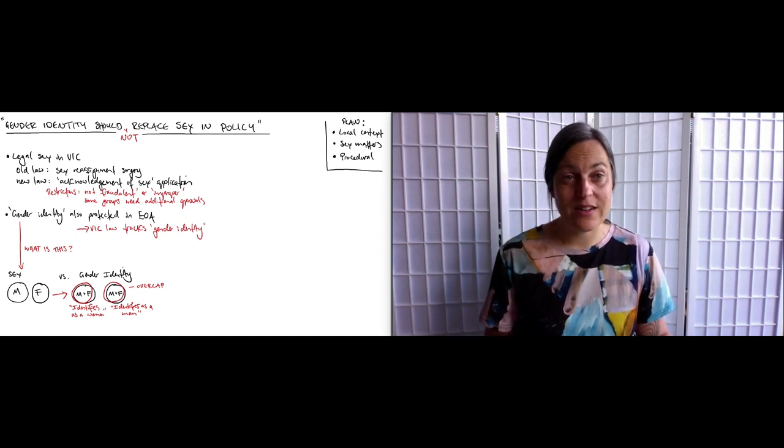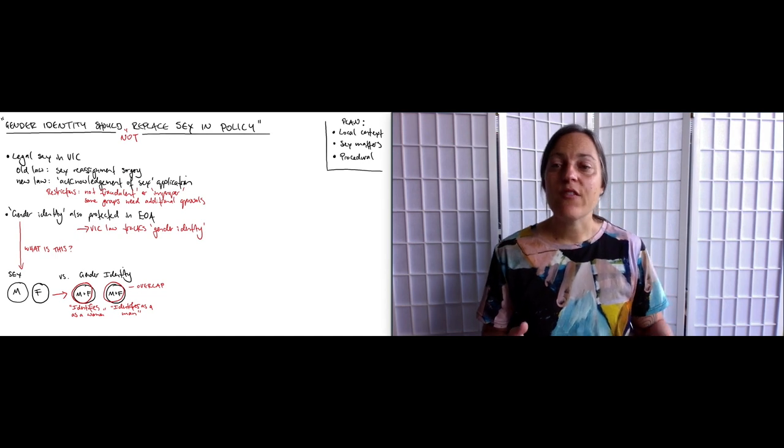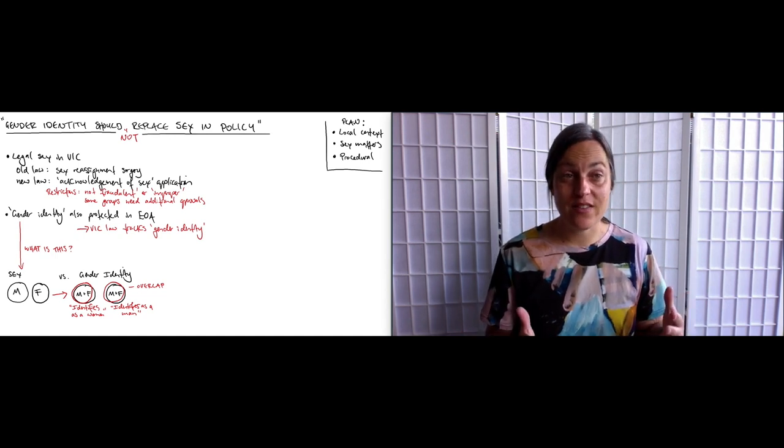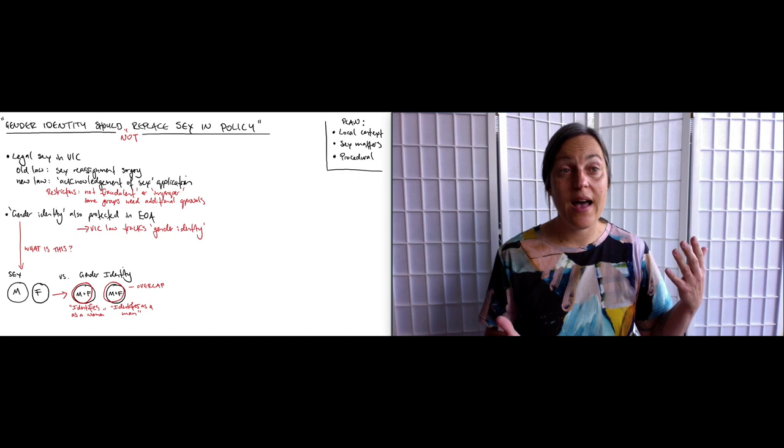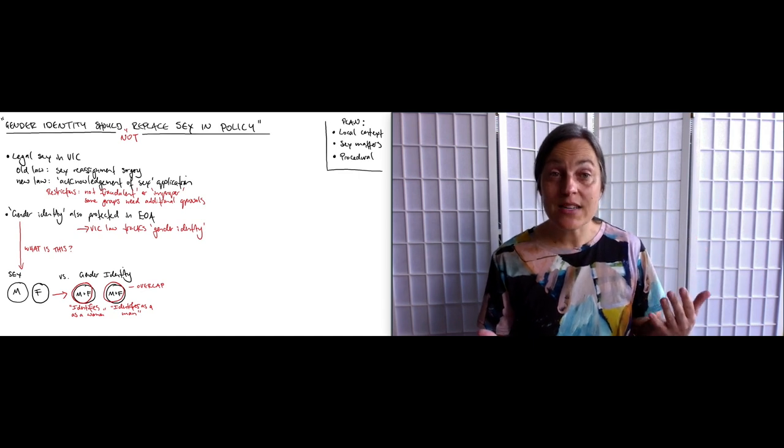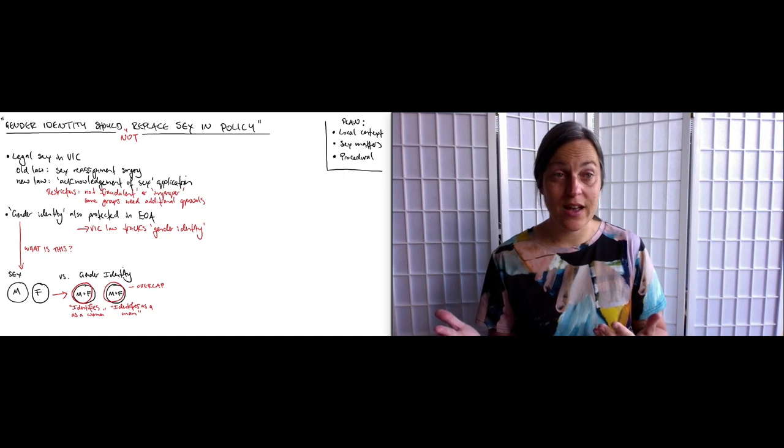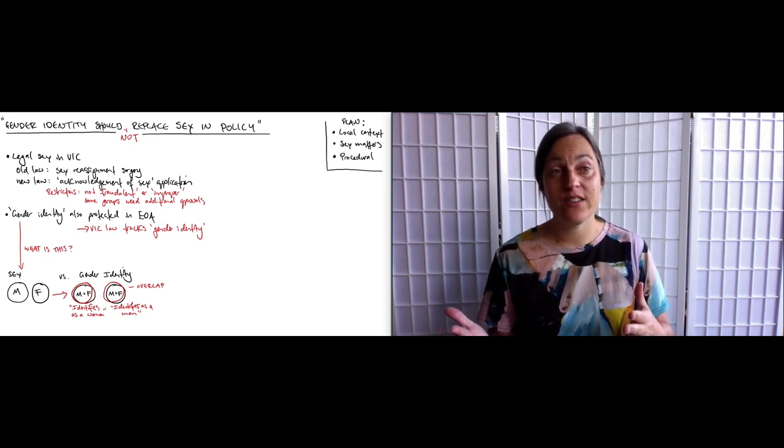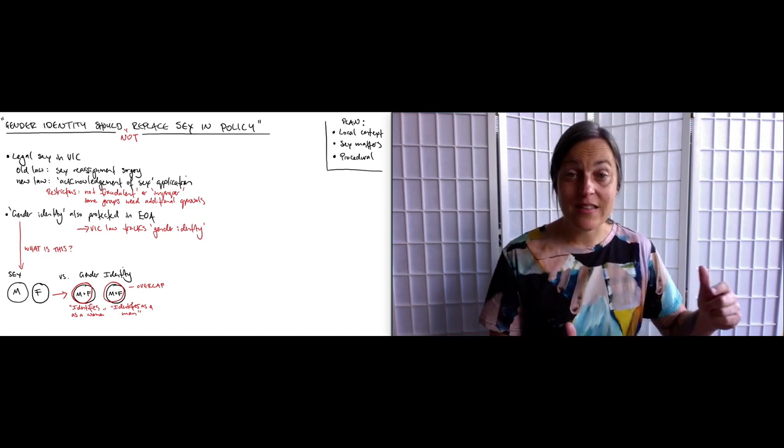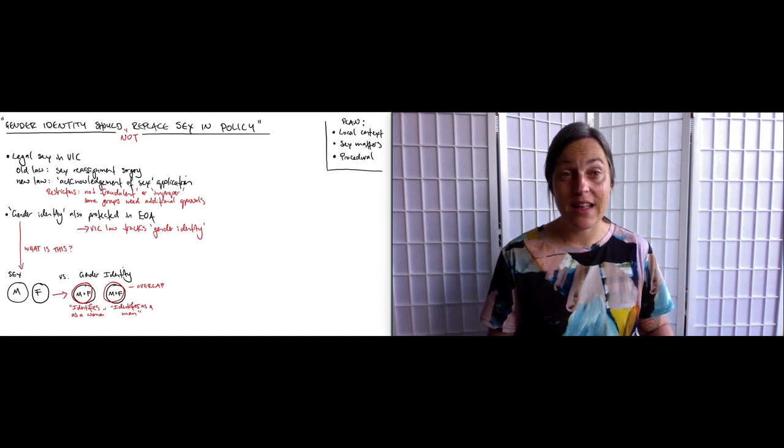So take a trans man for example. If we divide some provision based on sex, so for example having an earlier age of retirement, then the trans man will be in the female slash woman category. But if we divide that provision based on gender identities, then the trans man will be in the male slash man category.